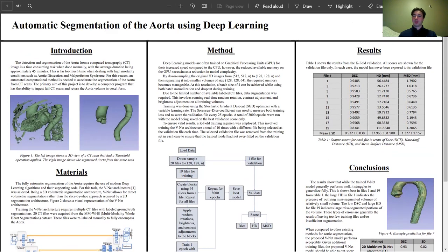Those scores can be seen up here in the results section. We can see the file number and see the dice scores that each one achieved, the Hausdorff distances, and the mean surface distances along with their average and standard deviation at the bottom.